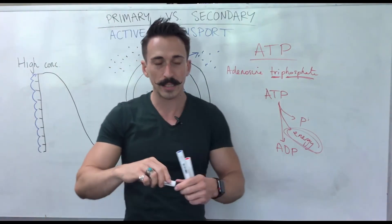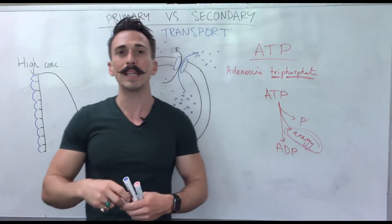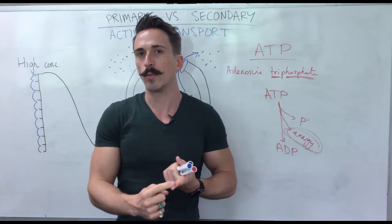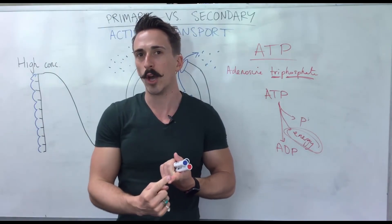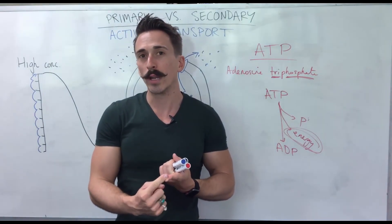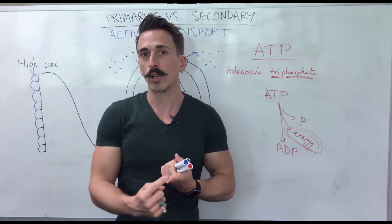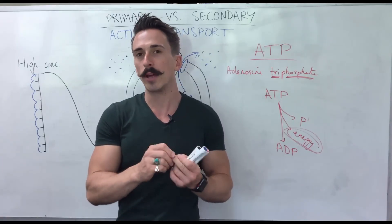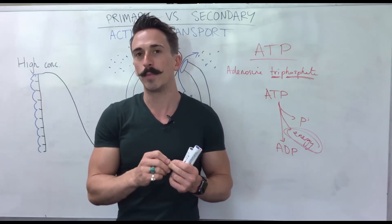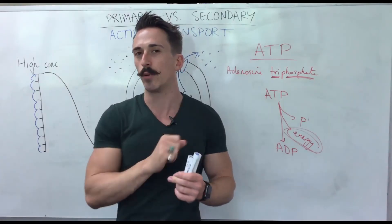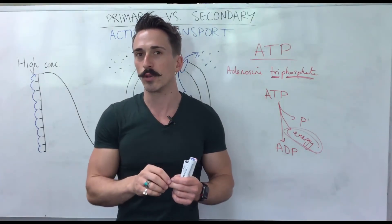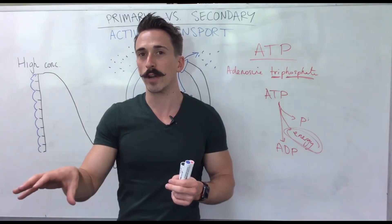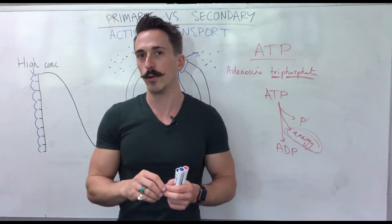The take-home message is that active transport requires energy — either in the form of ATP, or in the form of stored energy when a solute goes down its concentration gradient. If it's using ATP as its primary energy source, it's called primary active transport. If it's using energy stored from a solute going down its gradient, it's called secondary active transport.